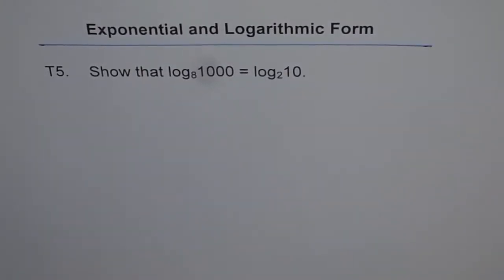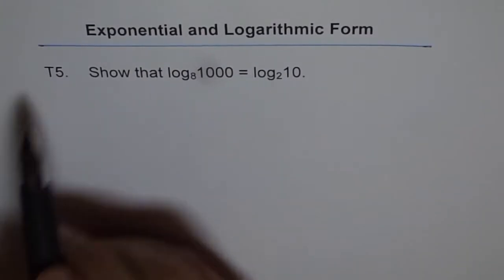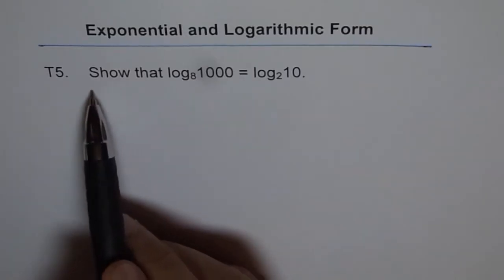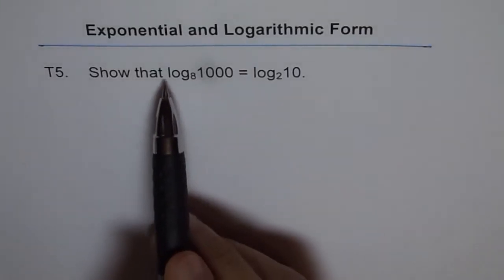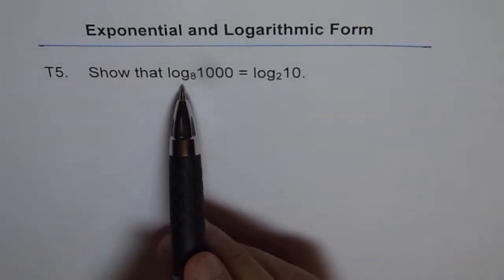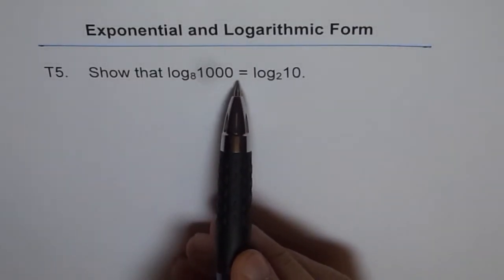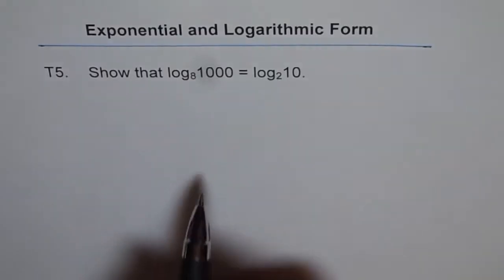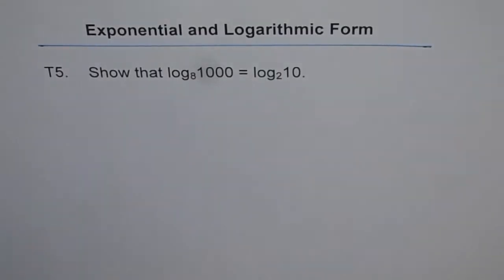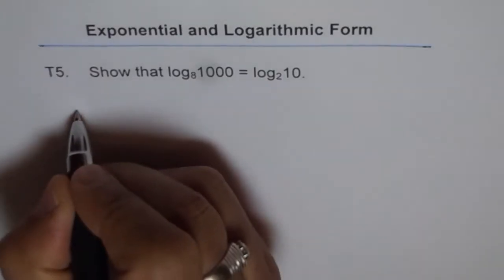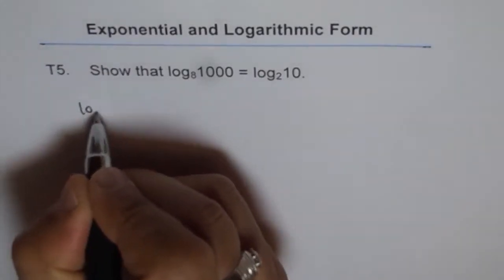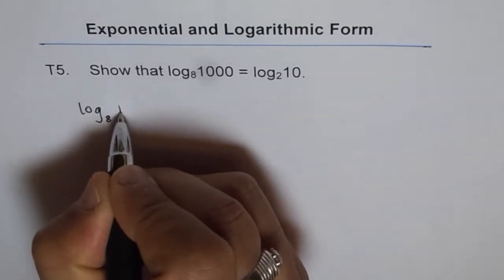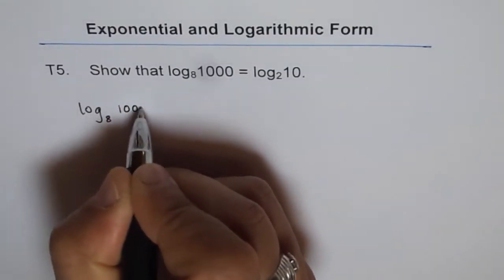Here is another thinking problem based on change of base, T5. Show that log to the base 8 of 1000 is equal to log to the base 2 of 10. So let's start with the left side. We have log to the base 8 of 1000.